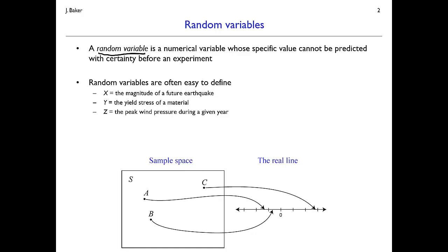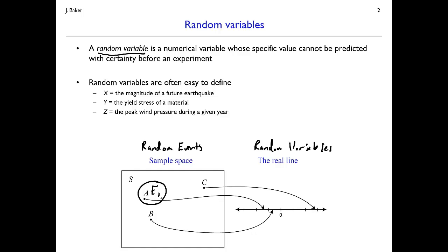It's easy to represent unpredictable quantities via random variables. Here's a graphic showing the relationship between random variables, on the right, and random events from previous videos, on the left. When thinking about random events, we had a sample space with outcomes that we drew as circles labeled E1 and so on. With random variables, we can think about numeric values instead, and represent our sample space by the real line in general.